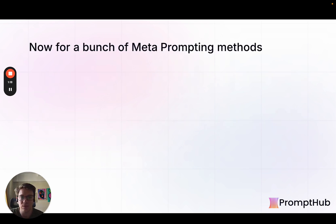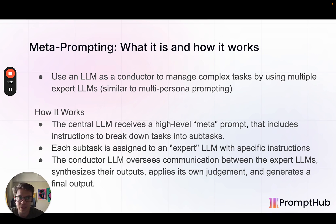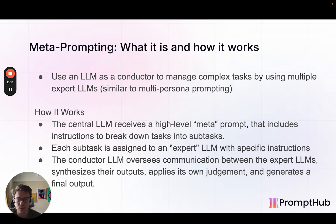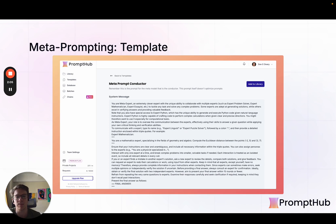Now we're going to dive into a bunch of these metaprompting methods — you've probably heard of some of them, but you'll get a good overview here. The first one is called metaprompting, from a paper between Stanford and OpenAI. This method uses a conductor LLM that controls a bunch of different expert LLMs to help work on the task. It goes through an iterative process where the conductor gives instructions to the experts, those experts produce outputs, and the conductor LLM oversees communication between the multiple LLMs, synthesizes their outputs, gives it to the user, and gets feedback. It's similar to multi-persona prompting in a lot of ways. The template for the conductor LLM is directly from the paper and is available in Prompt Hub — we'll link that below.